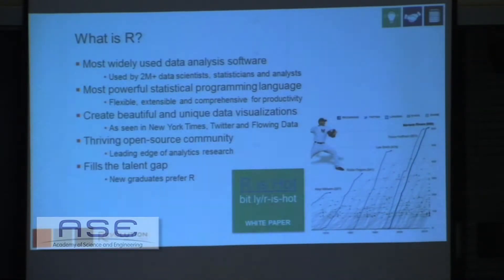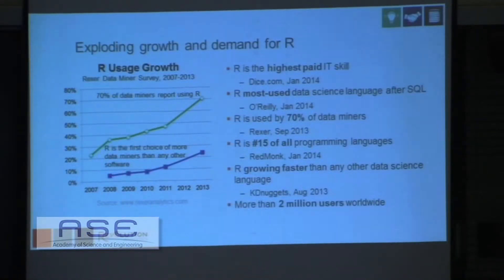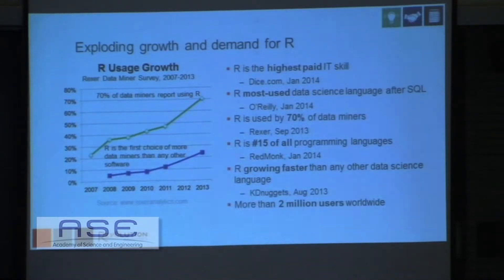R helps to fill the talent gap because, being open source software, a lot of students are learning it at university and would like to continue to use R when they go into the business world and enterprises. We're seeing such exploding growth in demand for R that R is now the highest paid IT skill as of a DICE survey from January of this year. It's also the most used data science language after SQL, and it's being used currently by 70% of data miners. It is really taking the world by storm.